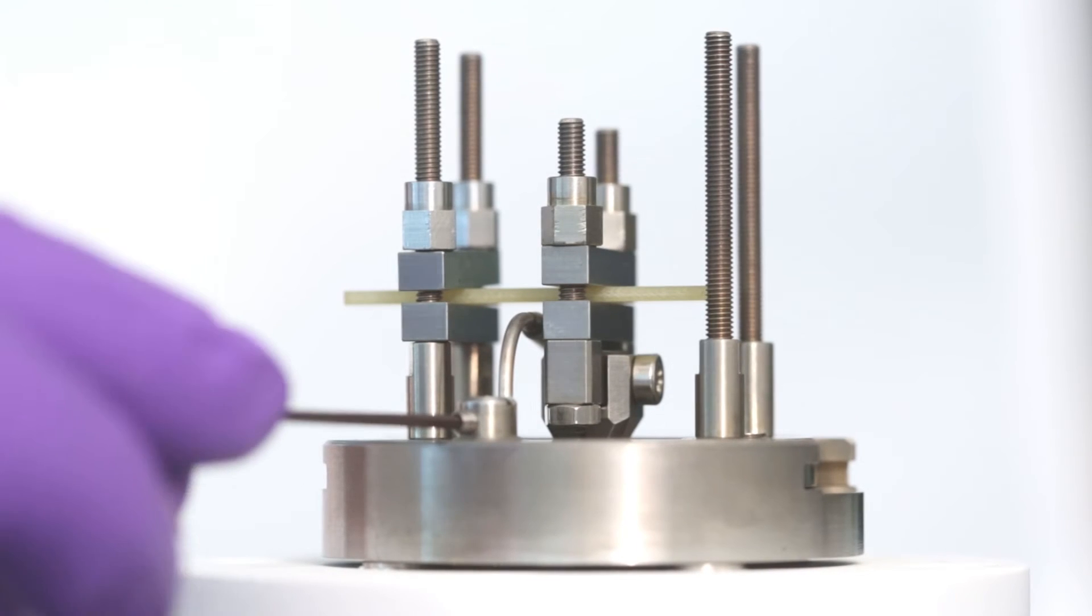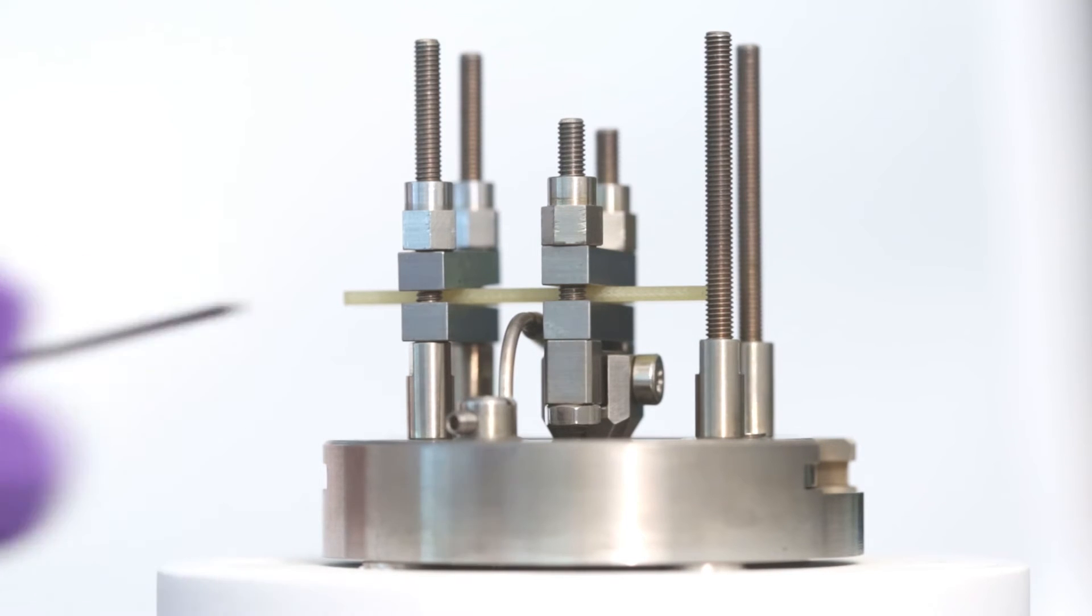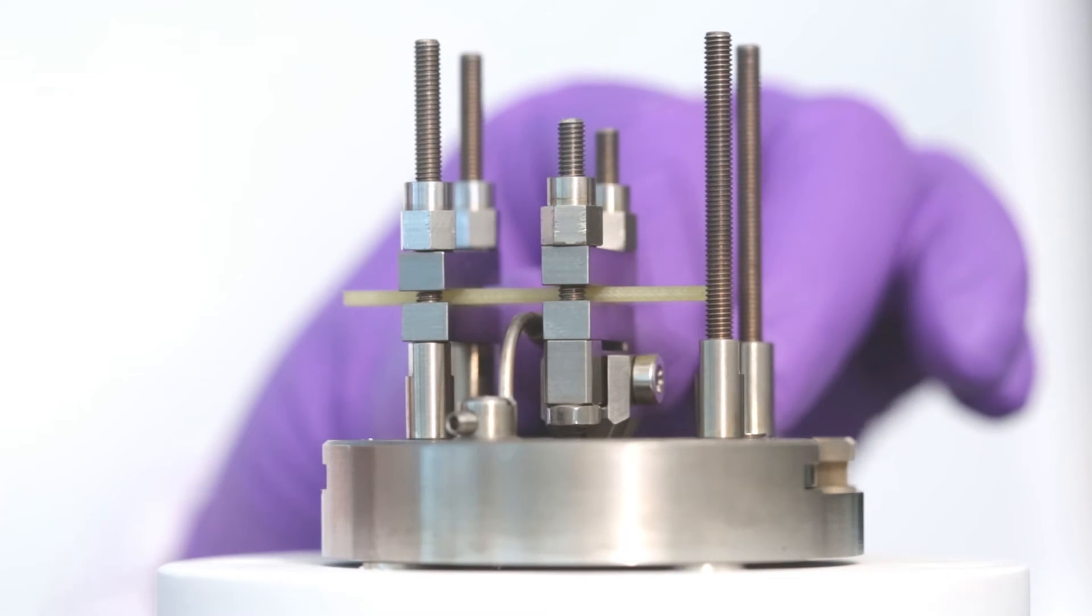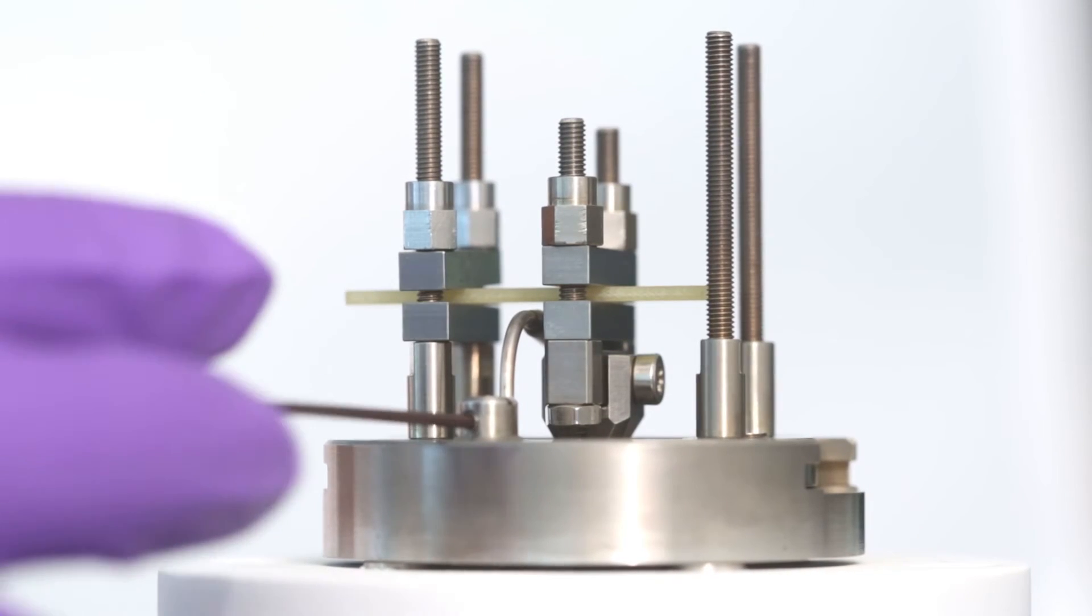Loosen the securing screw of the temperature sensor with a 1.27 mm Allen key. Position the temperature sensor as close as possible to the sample without touching it. Then, tighten the securing screw.